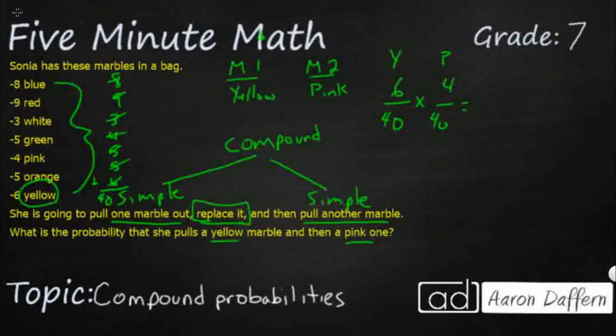We multiply both of those to find the compound probability. So, when we multiply straight across, we're going to multiply our numerators first. 6 times 4, it's going to get you 24. And then, 40 times 40, we'll think 4 times 4 is 16. And I've got two 0s, so I'm going to make it 1,600.